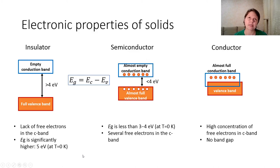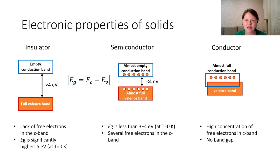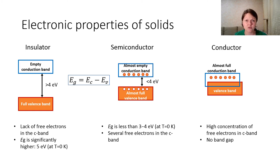When we say semiconductor we should also bear in mind that there exist insulators and conductors. The main question is what is the difference between all of them. The insulator has an almost full valence band — which in classical physics is the highest occupied band. The insulator also has an empty conduction band, and the forbidden band between the conduction band and the valence band has a really large width — more than 4 eV, sometimes 5 eV or 9 eV. The conduction band in classical physics is the lowest unoccupied band.